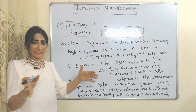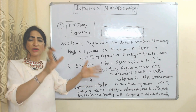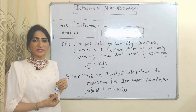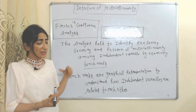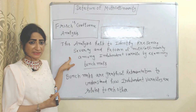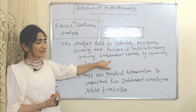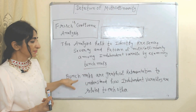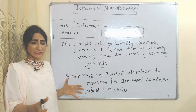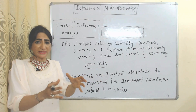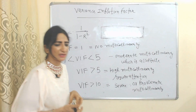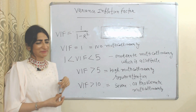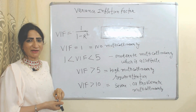A significant F-ratio in the auxiliary regression model indicates that a group of other independent variables explains one variable well, meaning variables are highly correlated and leading to multicollinearity. Frisch confluence analysis also helps to understand the presence, severity, and patterns of multicollinearity among independent variables by examining bunch maps — graphical representations which help understand how independent variables are related to each other.